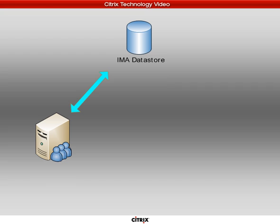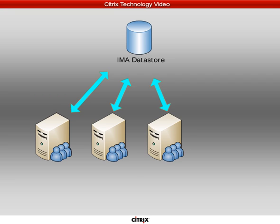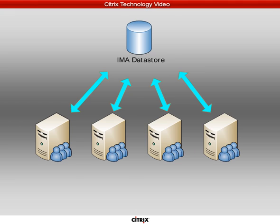In case you're wondering why Citrix architected Presentation Server to store its configuration information in a database and not locally — the answer is that by storing information in a database, it allows us to build multiple Presentation Servers that all attach to the same database. In doing so, we can manage all of these together as one single unit. This technically is what Citrix means when they say a server farm: a group of Citrix Presentation Servers sharing the same IMA Data Store — that configuration database — and being managed together as one single unit.